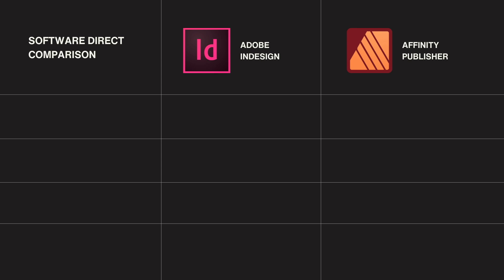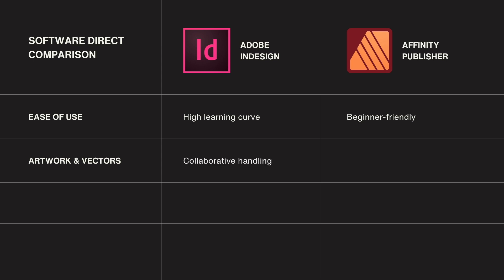So how do these two programs compare when it comes to designing a bookmark? Let's break it down. Ease of Use: InDesign has a steeper learning curve but is incredibly powerful once you master it. Publisher, on the other hand, feels more approachable and streamlined — perfect for someone looking to quickly create professional designs without a steep learning curve. Artwork and Vectors: InDesign's vector handling is top-notch but often requires jumping into Illustrator for detailed edits. Publisher's integrated approach with Studio Link lets you tweak vectors directly within the program, which can be a big time-saver.